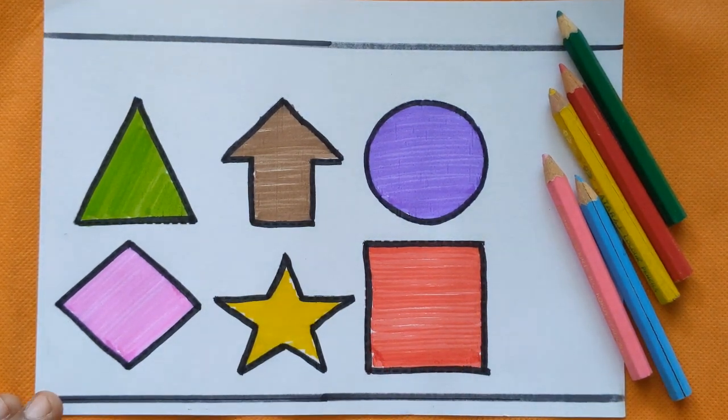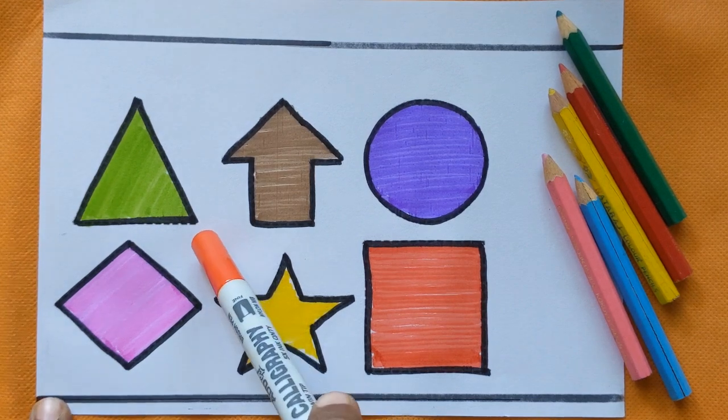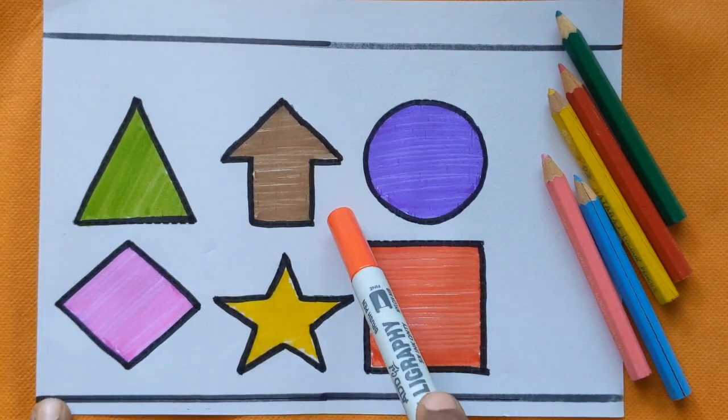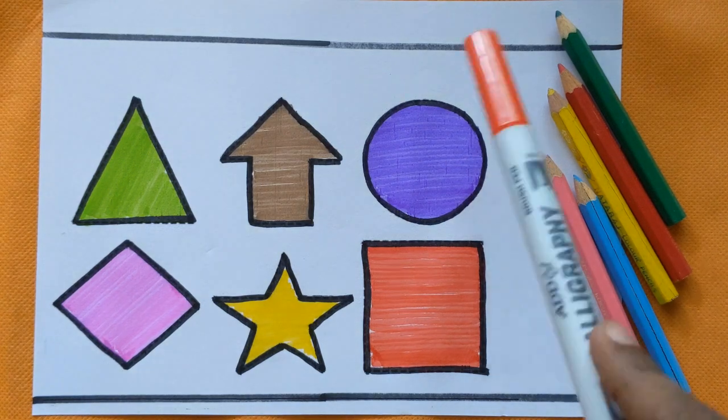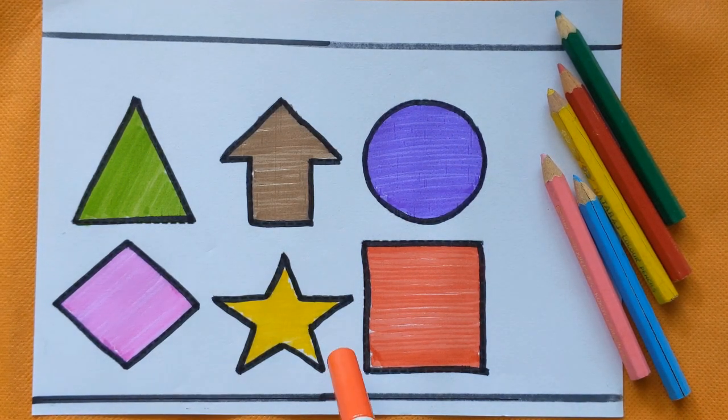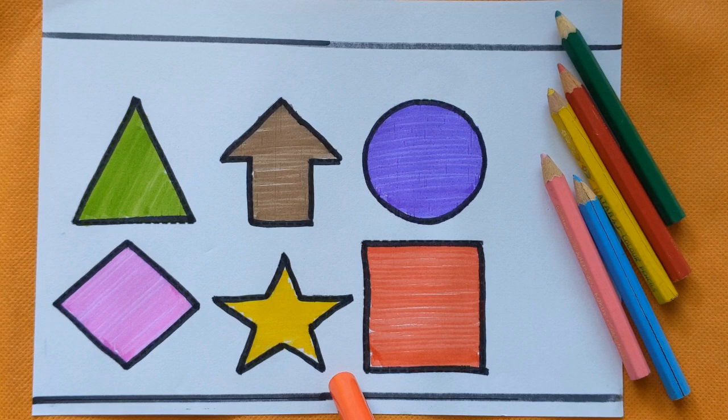And square, red color. Triangle, light green color. Arrow, brown color. Circle, violet color. Rhombus, purple color. Star, yellow color, and square, red color.